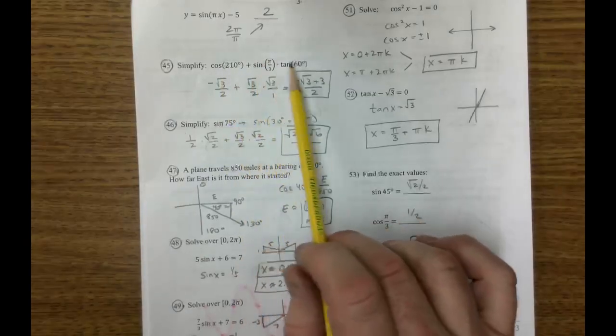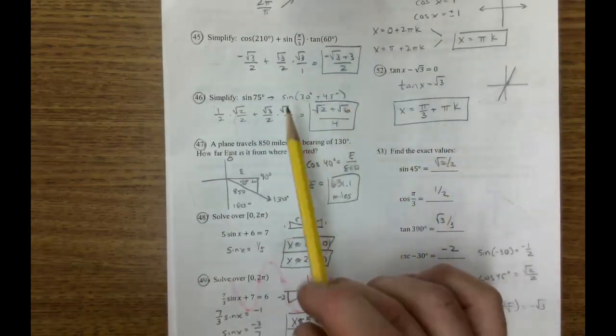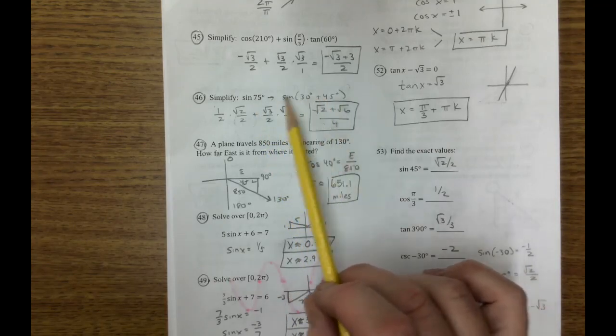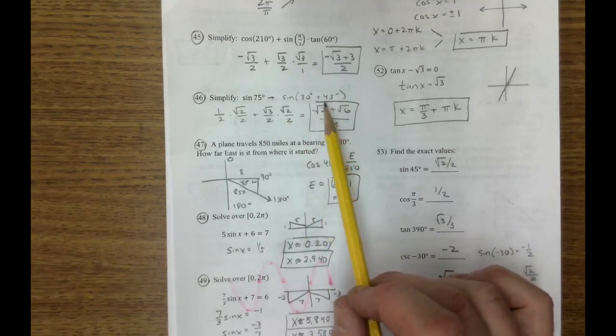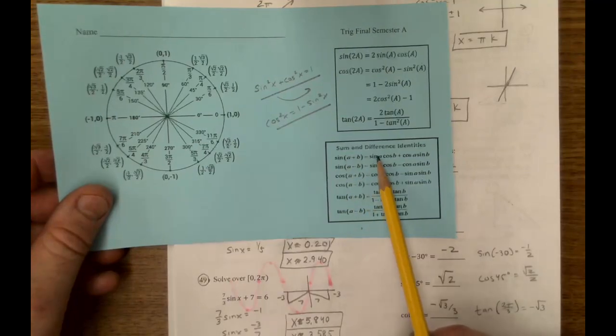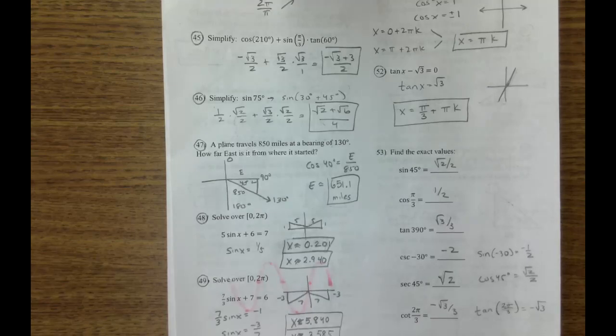45, these are all on the unit circle. Plug them in, do the computation. Sine of 75, however, not on the unit circle. But if we do write it like this, if we take 75 and write it into two pieces, now we can use this sine formula here that has 1, 2, 3, 4 parts. 1, 2, 3, 4 parts. And do the math.